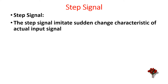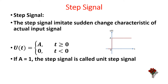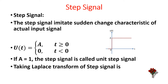Step signal. The step signal imitates the sudden change characteristic of the actual input signal. Mathematically, the step signal is represented as u(t) = a for t ≥ 0, and u(t) = 0 for t < 0. If a = 1, the step signal is called the unit step signal. Taking the Laplace transform of the step signal: L{u(t)} = a/s.